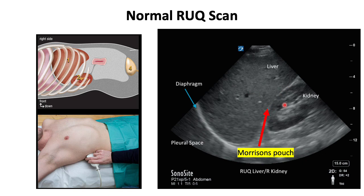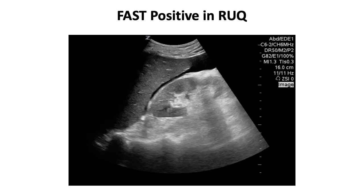When scanning, always look above and below the liver. Since this is a dynamic scan, make sure to look at the lower edge of the liver. An example of a FAST positive right upper quadrant shows a hypoechoic or black area outside the kidney, below the liver, and surrounding the lower edge of the liver.